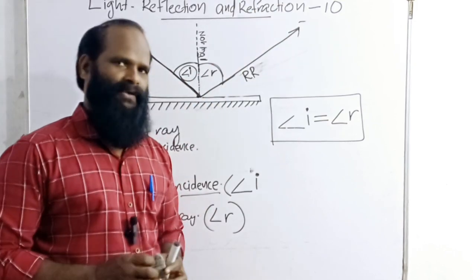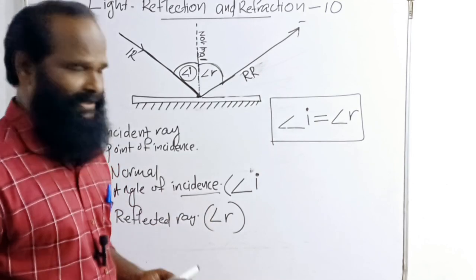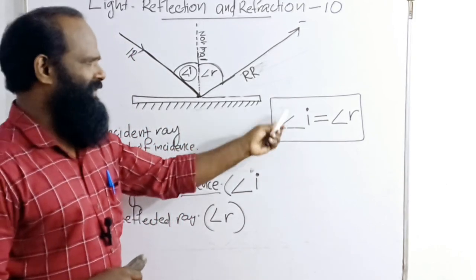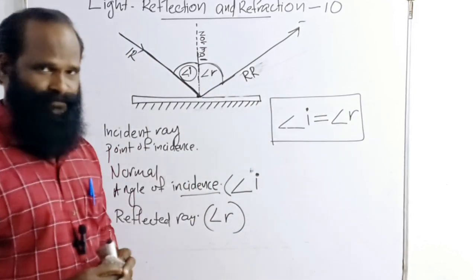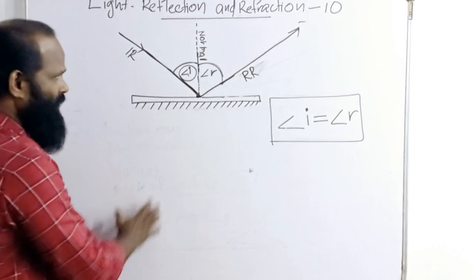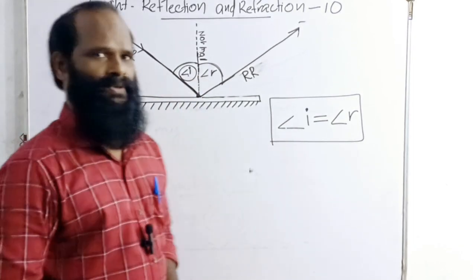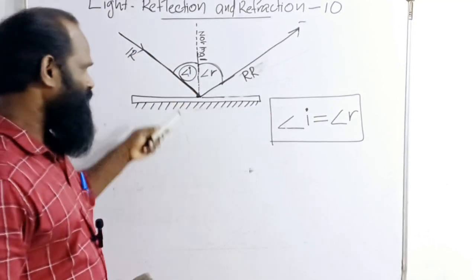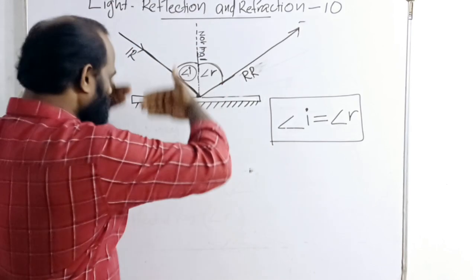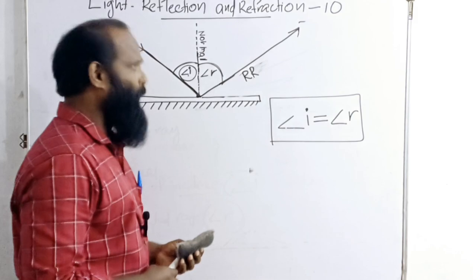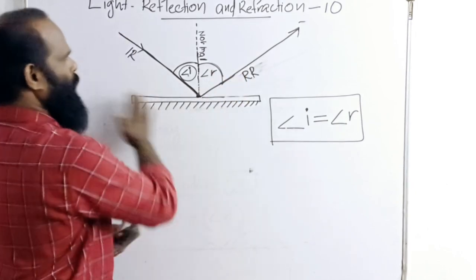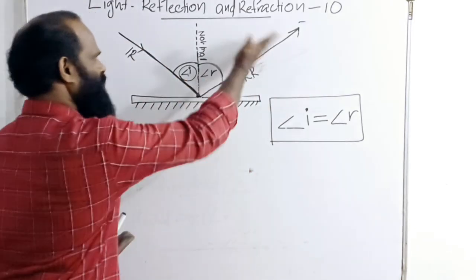This process is called reflection of light — the bouncing back of light from a smooth surface. The reflection of light obeys two rules. The first law: the angle of incidence and angle of reflection are equal. The second law: the incident ray, normal, and the reflected ray — all three of them fall on the same plane. I can draw all three of them on this plane, and indeed all three are on the same plane.